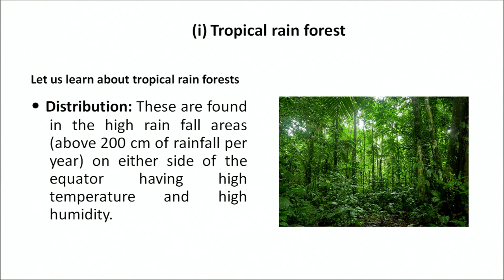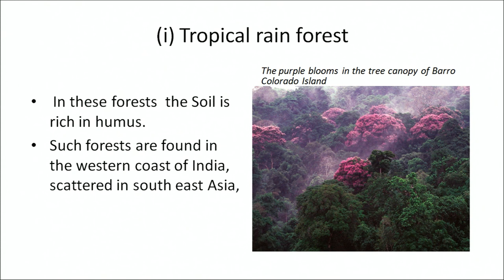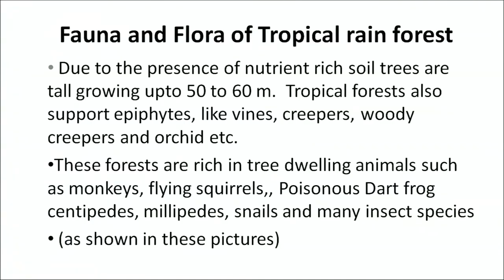Now, first of all, let us discuss about the tropical rainforests. The tropical rainforests are found in high rainfall areas — above 200 centimeters of rainfall — on either side of the equator, having high temperature and high humidity. In these forests, the soil is rich in humus. Such forests are found in the Western Ghats of India and scattered in Southeast Asia. Due to the presence of nutrient-rich soil, these trees are tall, growing up to 50 to 60 meters. The tropical forests also support epiphytes like vines, creepers, woody creepers and orchids.